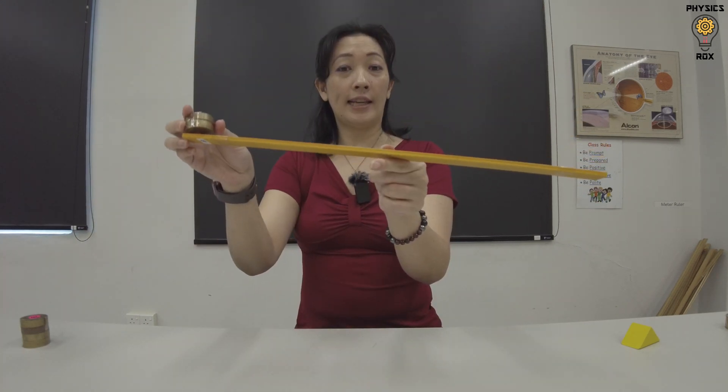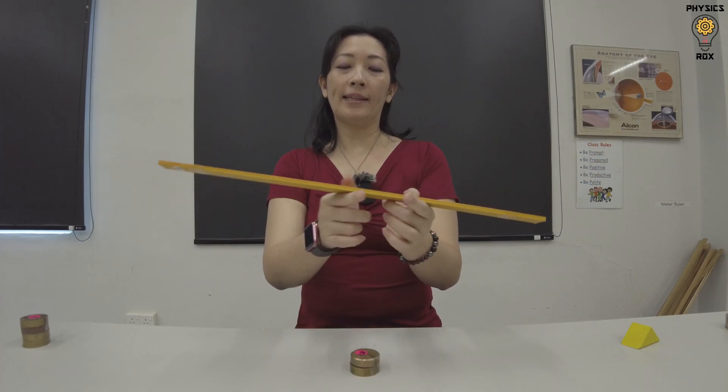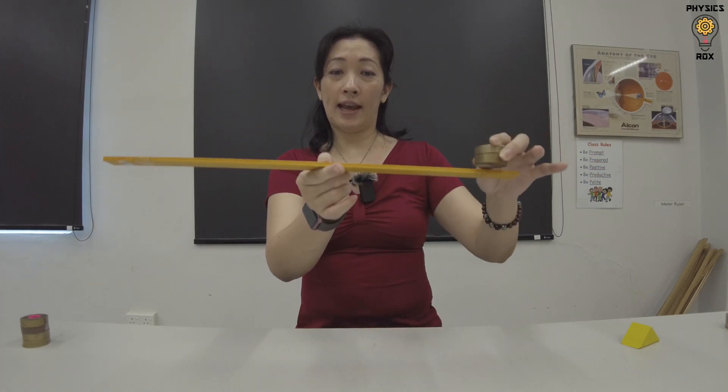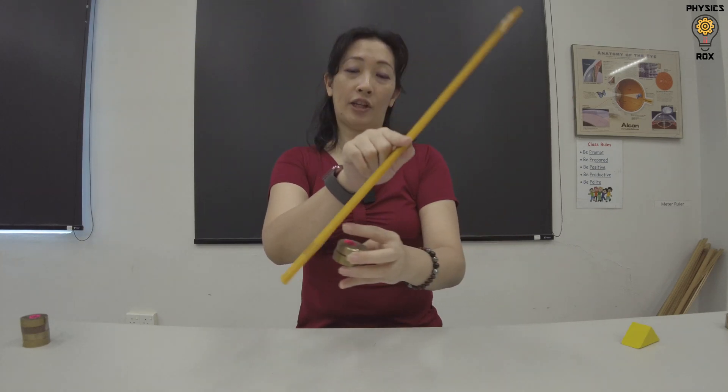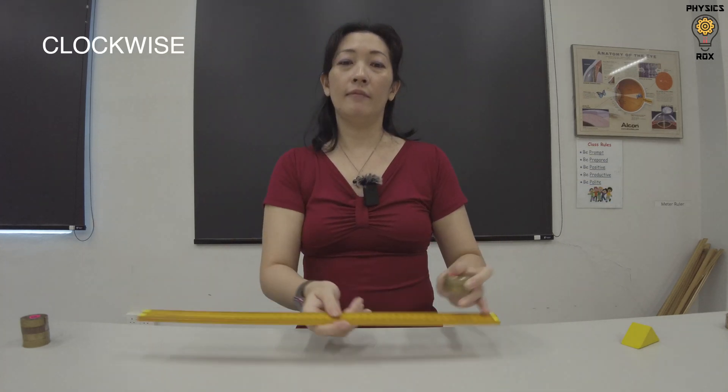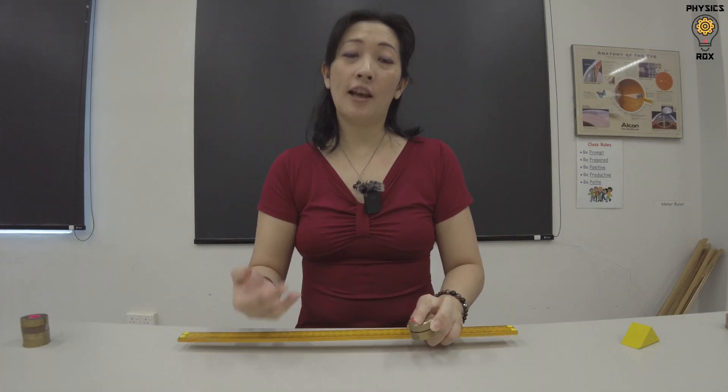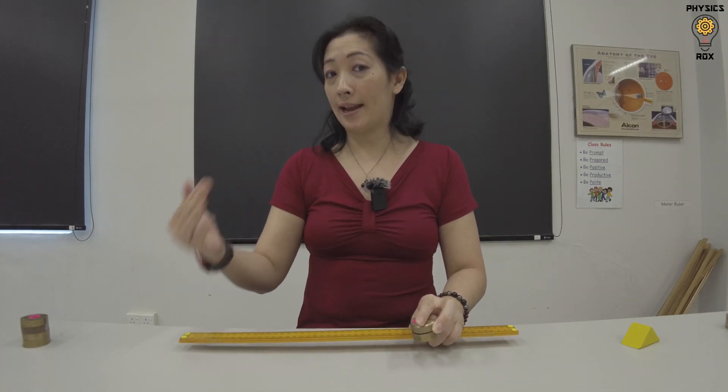Now, if we place the weight on the other end of the meter rule, you'll find that the meter rule will rotate this direction, or from your viewpoint, clockwise. So, when we talk about moments, we need to talk about its direction in terms of clockwise and anticlockwise.